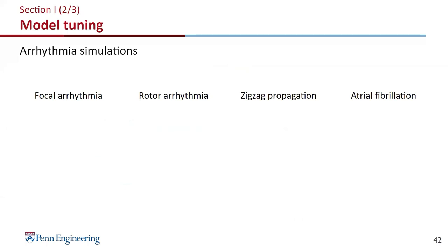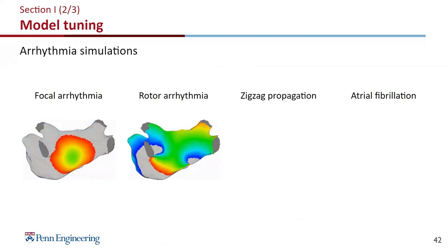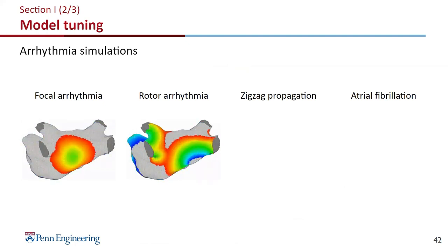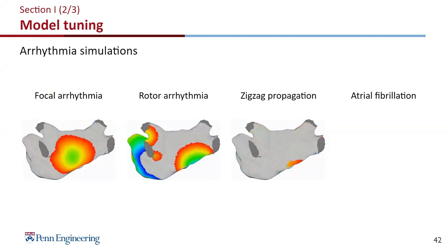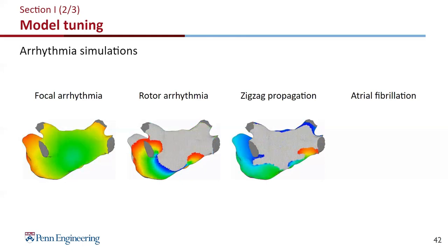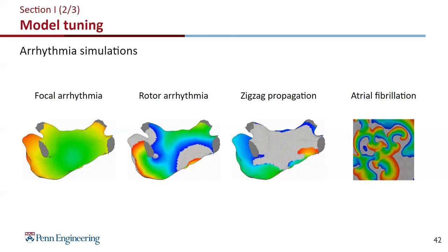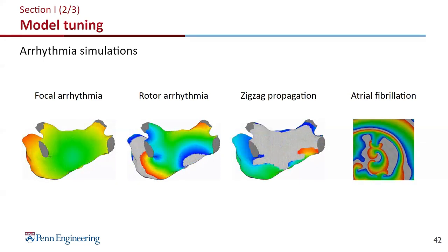Here are some example results of what our model can simulate: focal arrhythmia where the activation comes from an abnormal location; rotor arrhythmia where we have spiral waves causing irregular heartbeat; CSP propagation caused by irregular distributions of scar that create tunnels of varying conduction speeds; and lastly atrial fibrillation, a very chaotic rhythm and the most difficult arrhythmia.